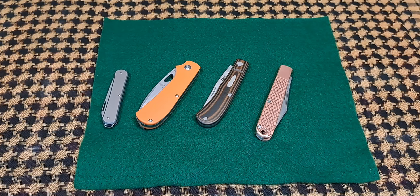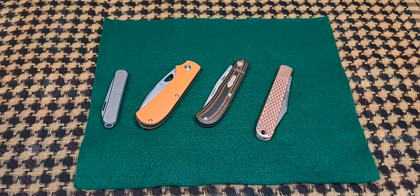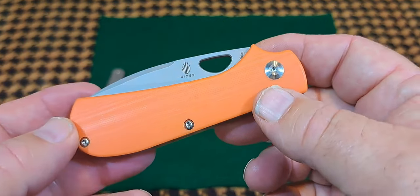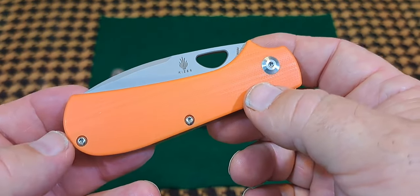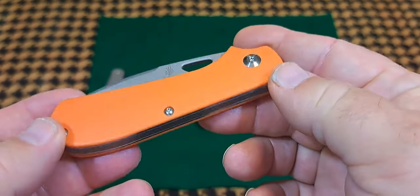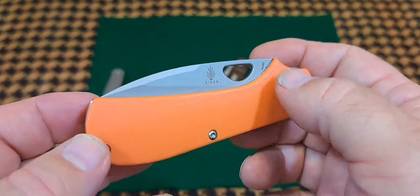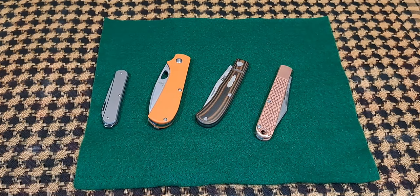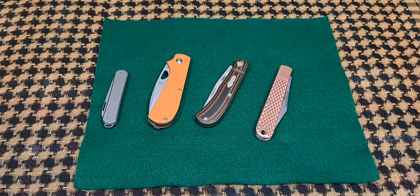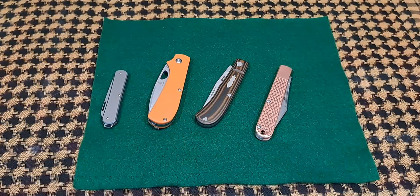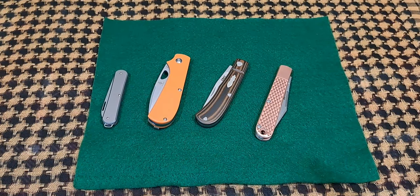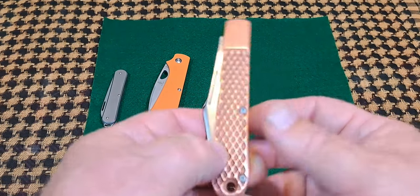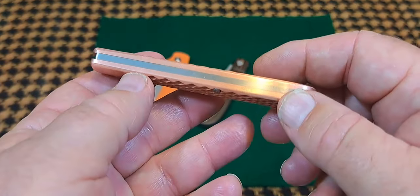When I looked on the internet, there was one reference to modern slip joint knives from a knife maker. It said that a modern slip joint knife is a slip joint knife with modern scale materials and modern steels in it. But I really don't think that is an adequate description of what these knives are.